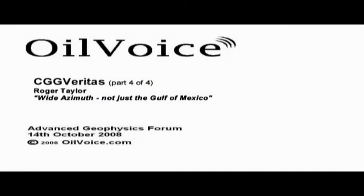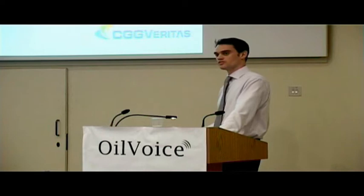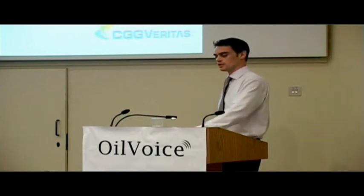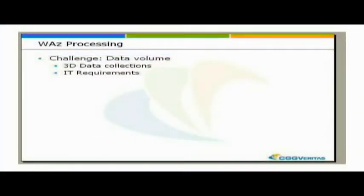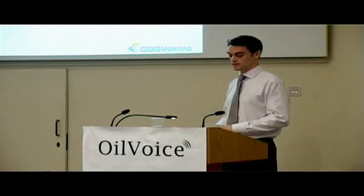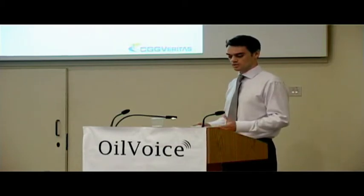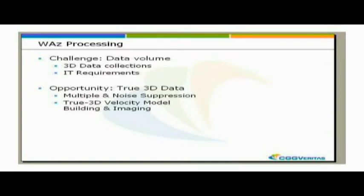The last subject to look at in detail is processing. The story for processing is that finally we have a data set that lets us get away from our narrow azimuth 2D assumptions used for 3D marine processing and do something more interesting. Wide azimuth processing presents a challenge: we have huge data volumes. Putting 460 blocks of wide azimuth data library through reverse time migration takes a lot of CPUs, and requiring 2.5 terabytes of raw high-density onshore data a day in Qatar takes a lot of disk space. There's a lot going on in the background to support this, but at the same time it provides an opportunity.